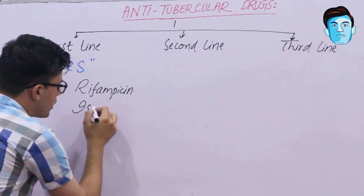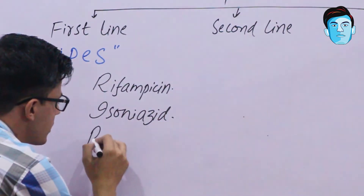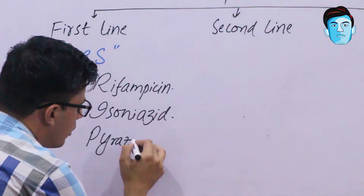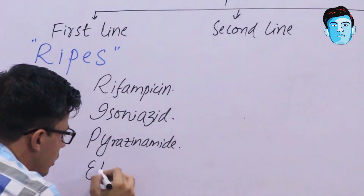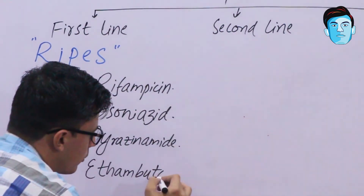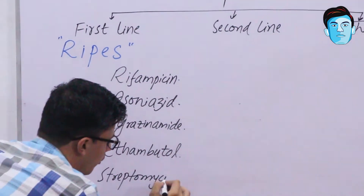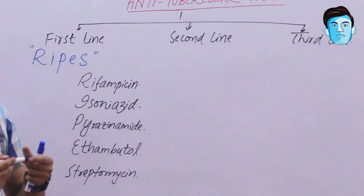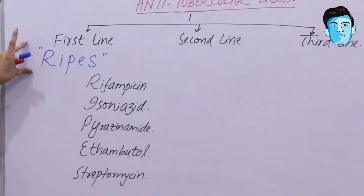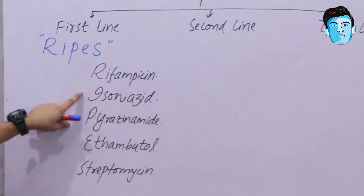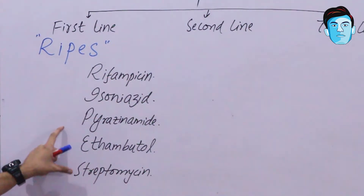I stands for Isoniazid. P stands for Pyrazinamide. E stands for Ethambutol. And S stands for Streptomycin. So the drugs under the category of first-line anti-tubercular drugs follow the mnemonic RIBES: Rifampin, Isoniazid, Pyrazinamide, Ethambutol, and Streptomycin.